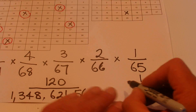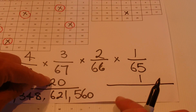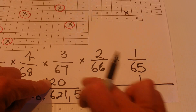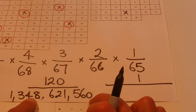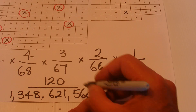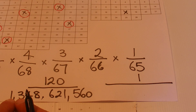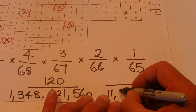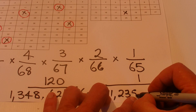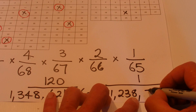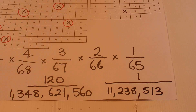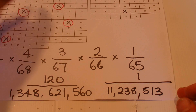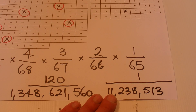To express that as one chance in something, we divide the top and the bottom by 120. That gives you 1, and dividing the bottom by 120: 1.348 billion divided by 120 gives you 11,238,513. So to get the five numbers in the first section, you've got one chance in approximately eleven million.